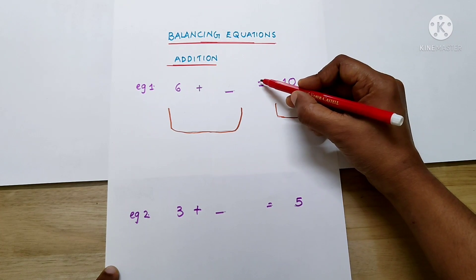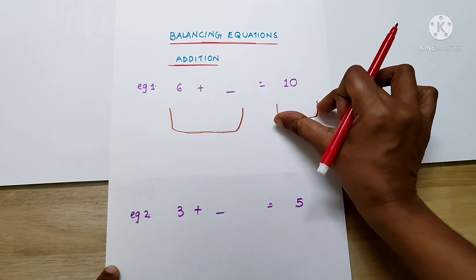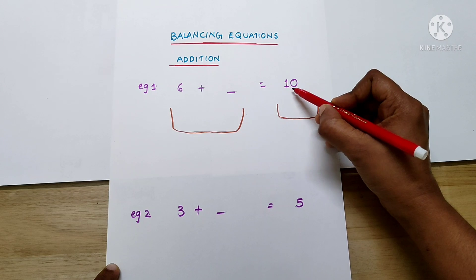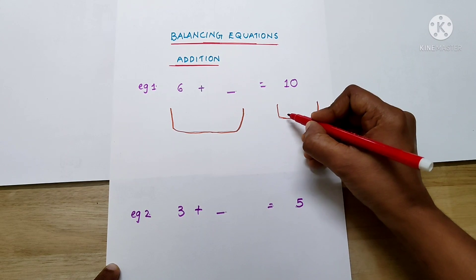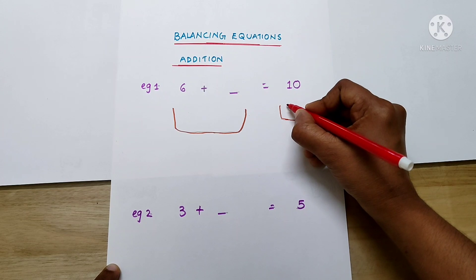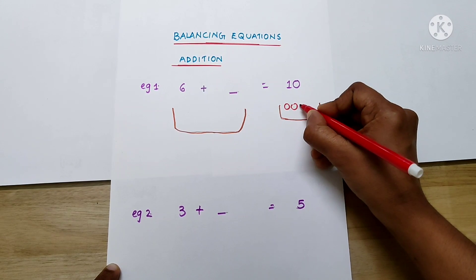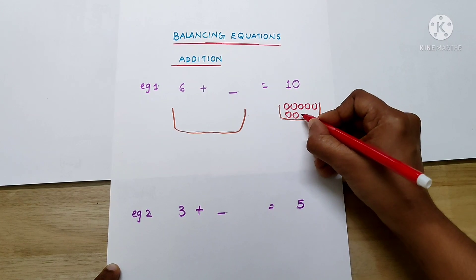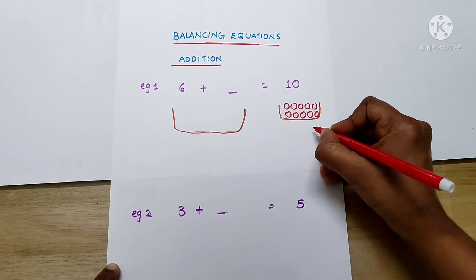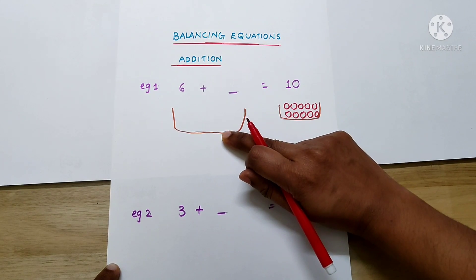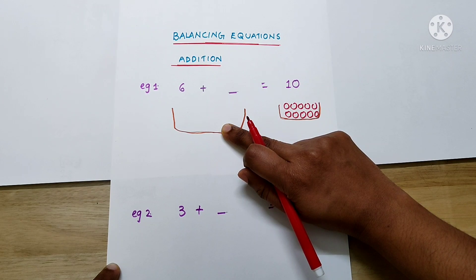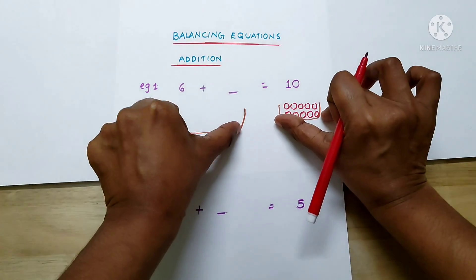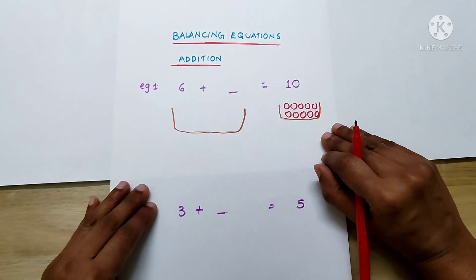Here there is an equal-to sign. So what does it mean? These two baskets should contain equal number of things. On the right side of the equation we can see the number 10, so that means this basket contains 10 apples. How many apples should be there in this basket? Yes, 10 — because there is an equal-to sign. These two baskets should contain equal number of apples.